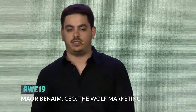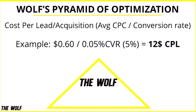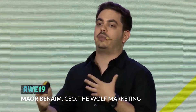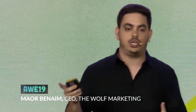So what you do is you take your CPC, you divide it by your conversion rate, you're getting the CPL. For each step that I'm going to show you right now, you multiply the CPL or CPA that you got to that specific step. This is the minimum that you have to spend before you decide to make any changes to that step.